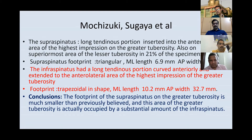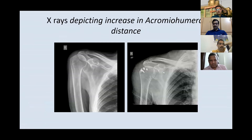Based on this anatomy, we modified our technique. Our posterior interval slide is now more curved anteriorly, performed in line with the infraspinatus fibers, which reduces the risk of devascularization. Following the release and interval slides, we can achieve a very good acromiohumeral distance, and superior translation is well controlled after repair.